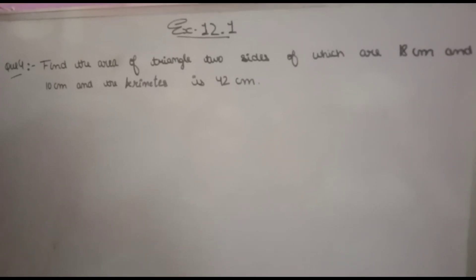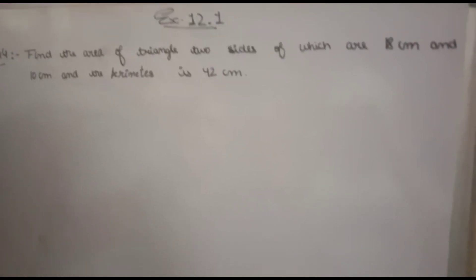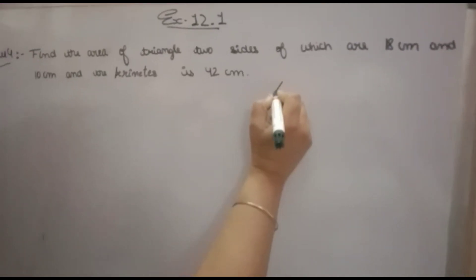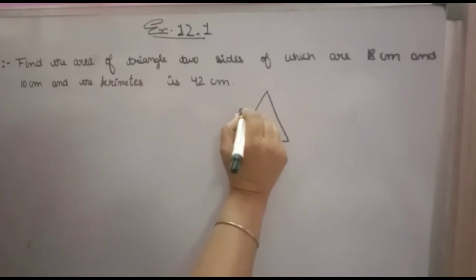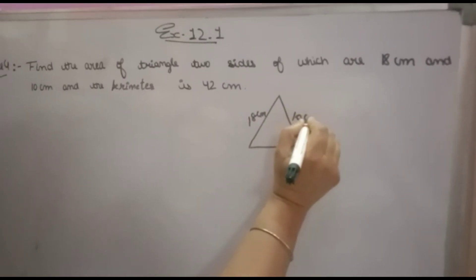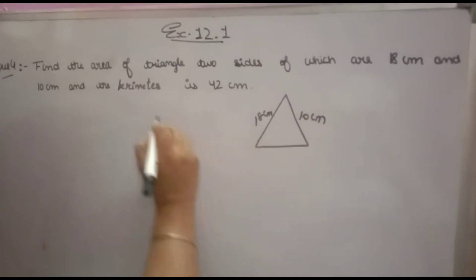Welcome back to your favorite channel, Math Helper. This is exercise 12.1, question number 4. Find the area of a triangle whose two sides are 18 centimeters and 10 centimeters, and the perimeter is 42 centimeters.